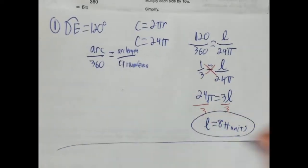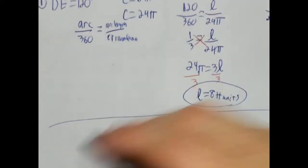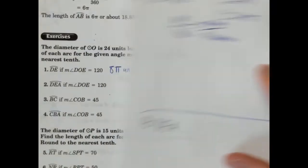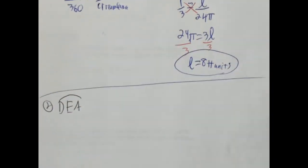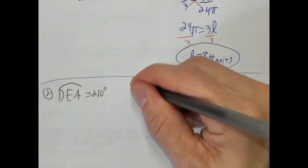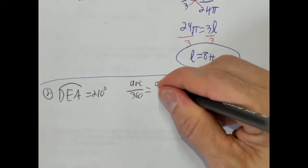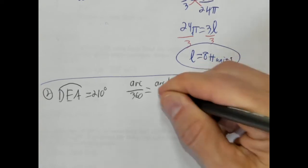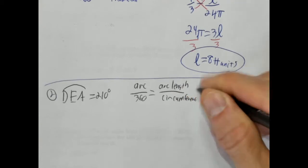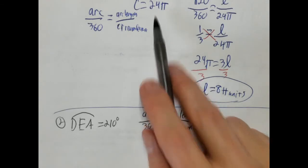So the arc is going to be 210 degrees, right? Let's go ahead and do a different color, actually. So DEA is 210 degrees. Let me go ahead and write this down here. DEA is 210 degrees. So we're going to go ahead and use the same proportion. So I'm going to write that down again. Arc over 360 equals arc length over circumference. And we're using the original value. We're going to be using that 24 diameter the entire time.